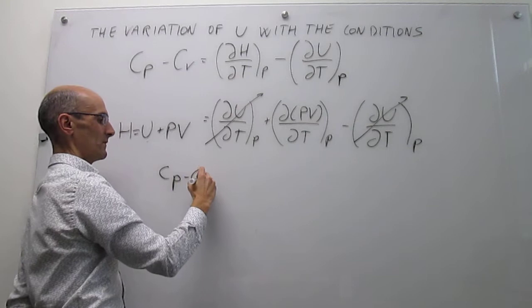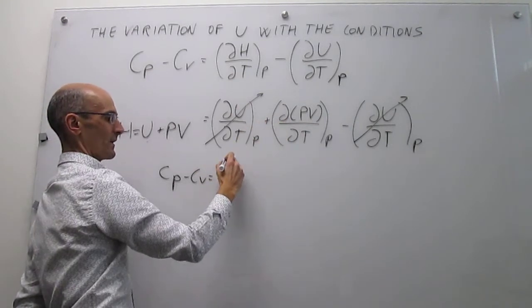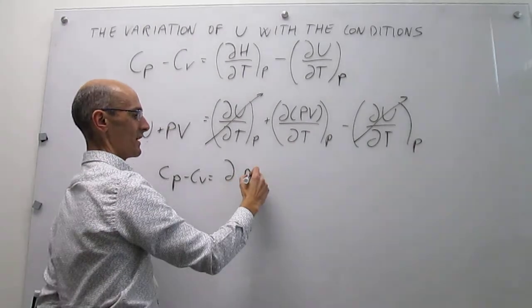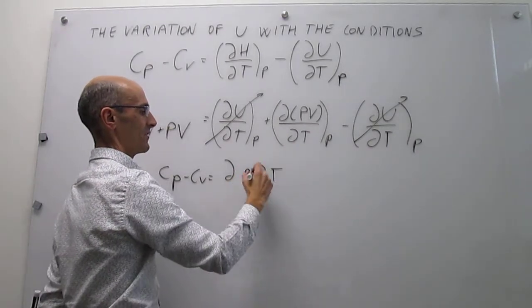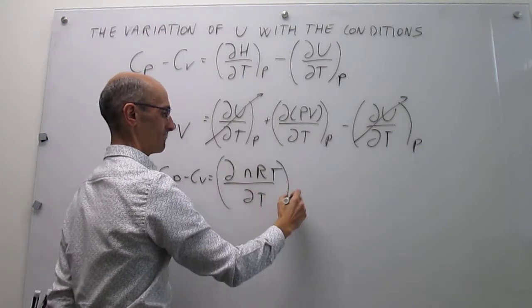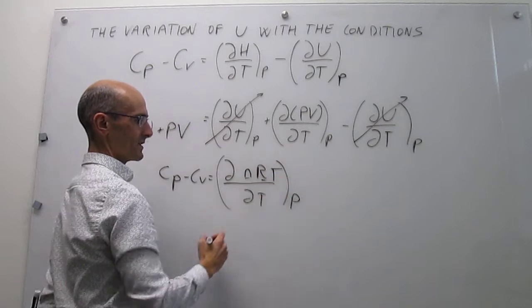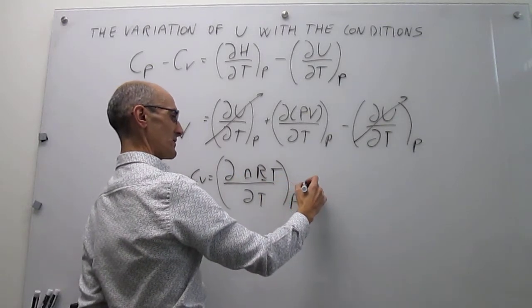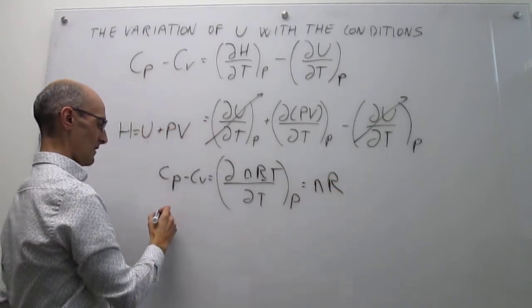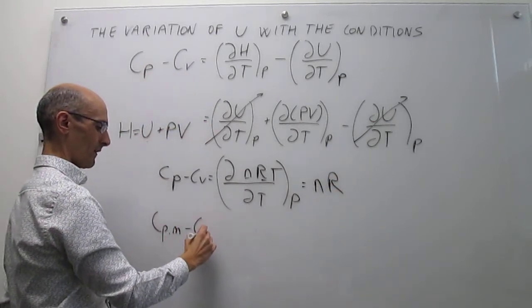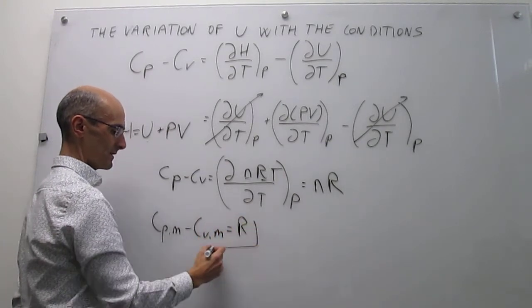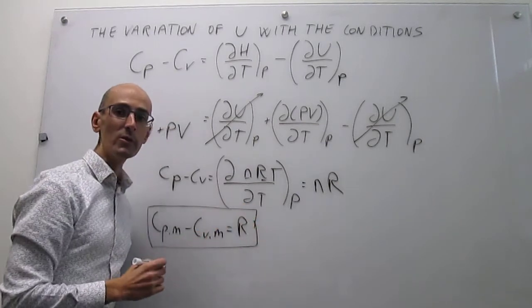So Cp minus Cv is equal to the differential of PV over dT at constant pressure. We use the ideal gas equation of state to recognize that this is simply d(nRT) over dT at constant pressure. Since n, R are constants with respect to temperature, this simply turns out to be nR — which results in the familiar equation Cp minus Cv equals nR, the relationship between heat capacities for an ideal gas, which we already knew but have now derived from first principles.